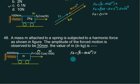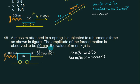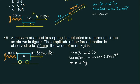F0 is 300. The value of K is 3000. We don't know mass. Omega is 100, so omega-squared is 100 squared. The value of amplitude is 50 into 10 to the power minus 3. We can solve this equation for mass. The mass comes out to be 0.1 kg. See you in the next section.